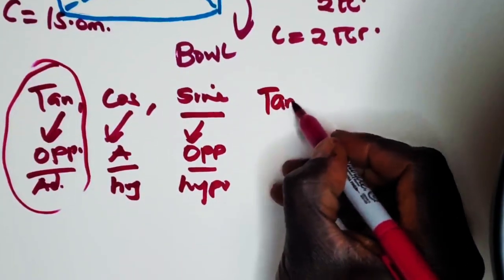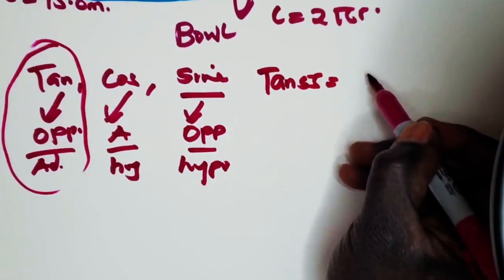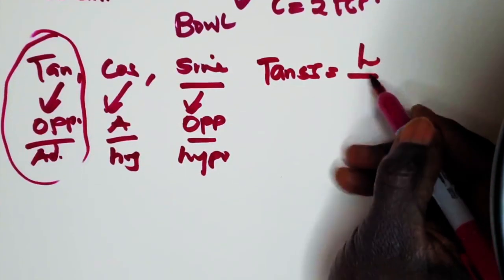So let's get the tan. Tan 55 is equal to H, which is opposite of R, which is our adjacent.